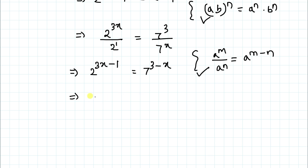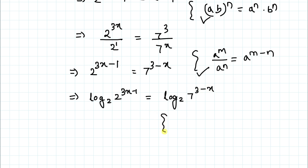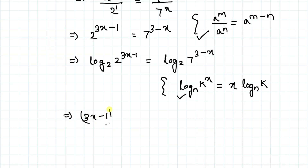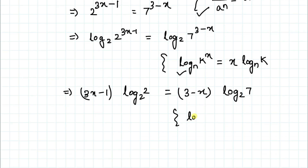Now I'll apply log base 2 to both sides: log base 2 of 2^(3x−1) equals log base 2 of 7^(3−x). Applying the logarithm power rule — log base n of k^x equals x times log base n of k — we get (3x−1) times log base 2 of 2 equals (3−x) times log base 2 of 7. Since log base 2 of 2 equals 1, this simplifies to 3x − 1 equals (3 − x) log base 2 of 7.